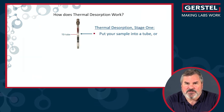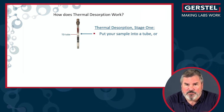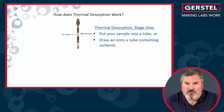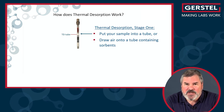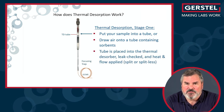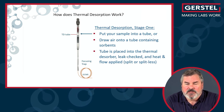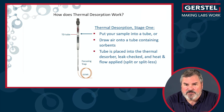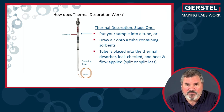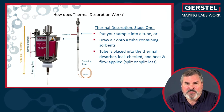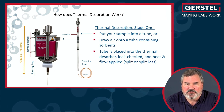Thermal desorption is a two-stage process. We start with a sample in a tube. You're going to put the sample in the tube, or if you're doing air analysis, you will have pulled air through that tube — typically a liter — and gathered it there. Once that sample is on the tube, the tube is placed in a thermal desorption system where it's leak-checked and heat and flow are applied. Flow can be done either split or splitless, so I can get everything or just a fraction. Once it's in the instrument, I heat the tube, apply flow, and move everything off the tube onto the focusing trap.